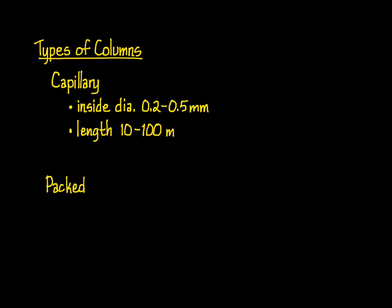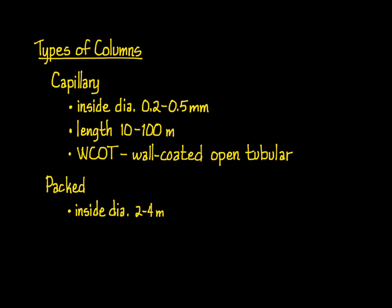Let's take a closer look at a few of the components, starting with the columns. As mentioned earlier, there are two types: capillary and packed. As the name implies, capillary columns are indeed very thin, with inside diameters of only 2 to 5 tenths of a millimeter, and they're generally quite long, anywhere from 10 to even 100 meters in length, coiled up to be placed inside of the instrument. The stationary phase is coated on the walls of the small tubes, with a small opening down the middle. These are commonly called WCOT, or wall-coated open tubular.